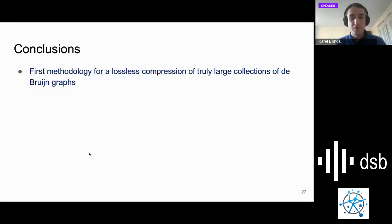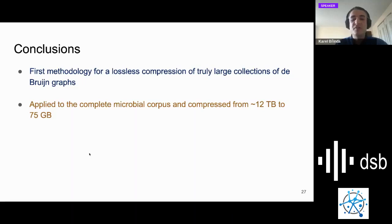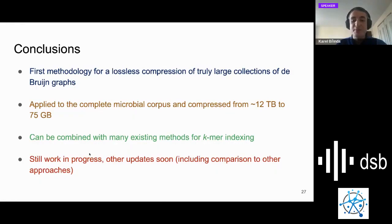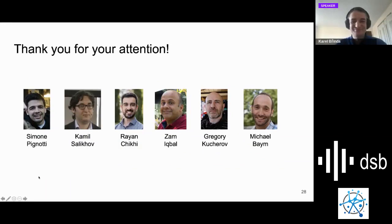Now I'm getting to the conclusions. It's still very much work in progress. These were just quick slides I was able to put together within several days. We believe this is the first methodology for lossless compression of truly large collections of de Bruijn graphs. When it's applied to the complete microbial corpus as of 2018, it's possible to compress the original McCortex files from 12 terabytes of data to approximately 75 gigabytes so it's downloadable from the internet easily. It can be put on a flash drive. The method can be combined with many existing approaches for k-mer indexing and k-mer compression, and this is what we are currently working on. We're trying to evaluate how well it can be combined with individual methods. It's still work in progress; there will be updates soon including comparison to other approaches. Thank you for the attention.